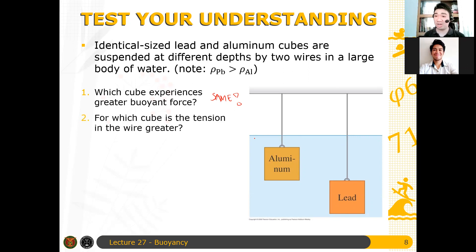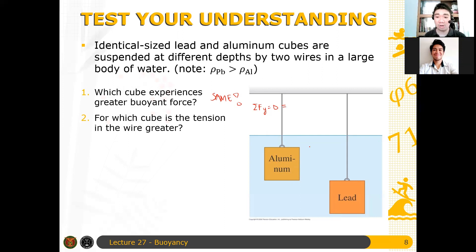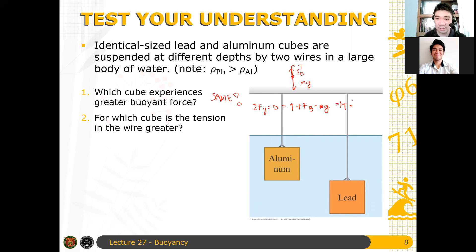Now, for which cube is the tension in the wire greater? The easiest approach here is to perform a summation of forces. Summation of forces acting on y is equal to zero, since the object is at rest in the fluid. You can draw a free body diagram — there is an upward buoyant force, an upward tension, and a downward weight. So this gives us: T plus buoyant force minus mg equals zero, meaning tension equals weight minus buoyant force.